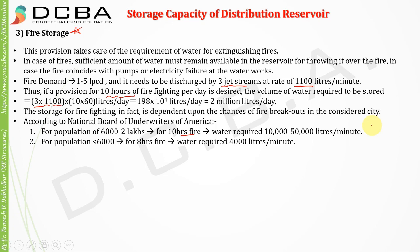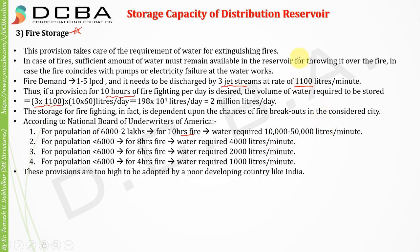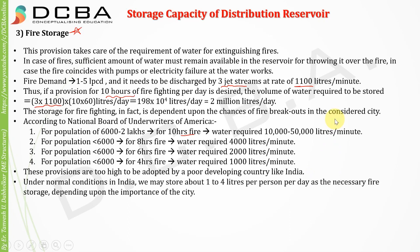For population less than 6,000 and for 8 hours of fire, the water requirement is 4,000 liters per minute. For population less than 6,000 and for 6 hours of fire, it is 2,000 liters per minute. For population less than 6,000 and for 4 hours of fire, water required is 1,000 liters per minute. However, these values from the National Board of Underwriters of America are too high for Indian scenarios. Under normal conditions in India, we may store about 1 to 4 liters per person per day as the necessary fire storage, depending upon the importance of the city.